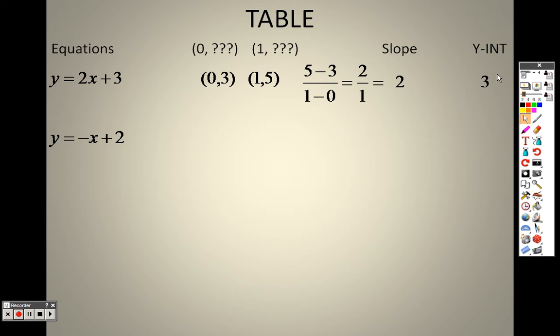The next problem, yeah, I can plug in a 0 and get a 2. I can plug in a 1 and I get a 1. And I can do all the math here, 1 minus 2 and 1 minus 0 to get negative 1. Or once again, I can just look here at the equation and go the number out in front of the x is the slope, which is negative 1. The number by itself, 2, is the y-intercept.